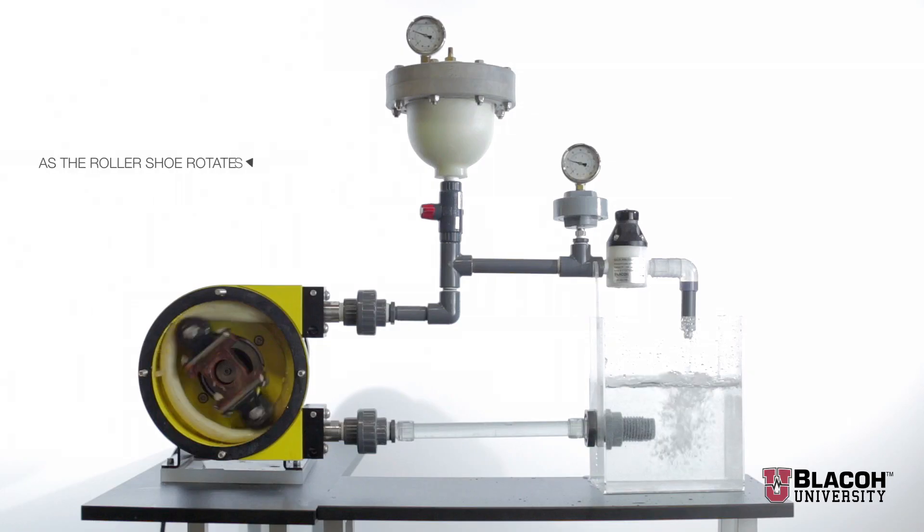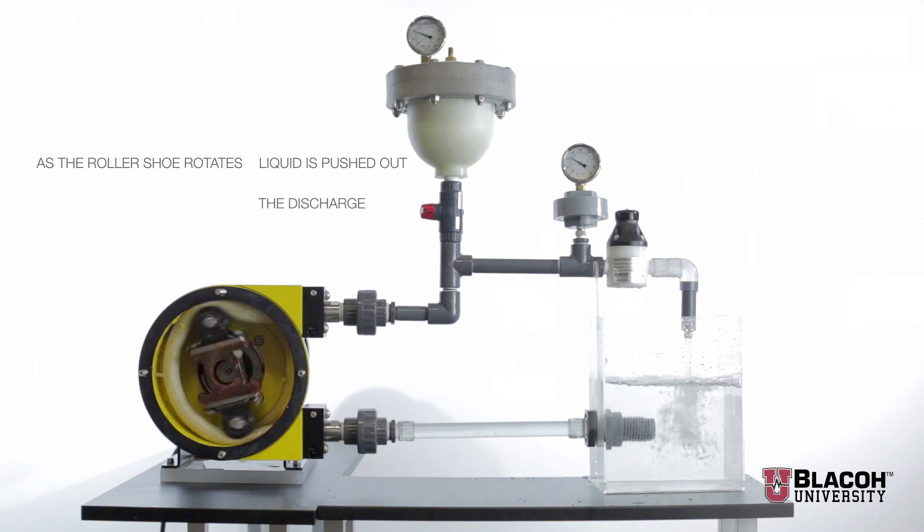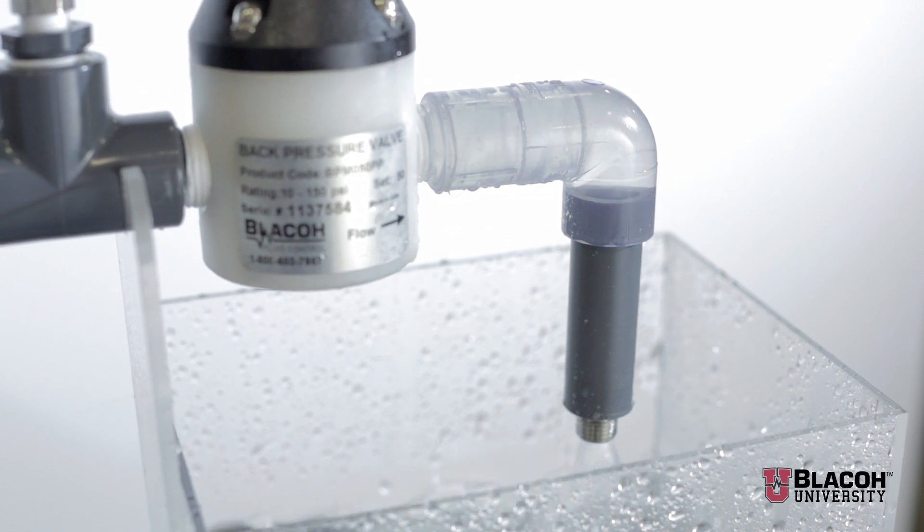As the roller shoe rotates, liquid is pushed out of the pump's discharge. When the roller shoe releases the hose after discharge, a momentary void or pocket is created where there is no product. This creates a partial vacuum as some product is actually sucked back to the discharge momentarily.